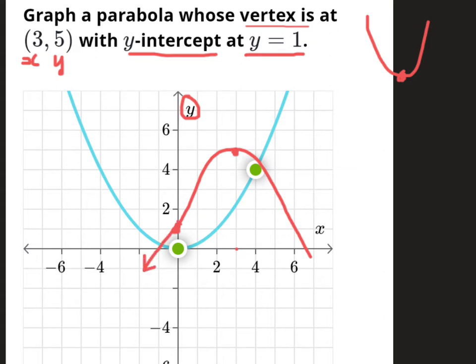So this is a parabola which has a vertex of (3, 5) and has a y-intercept of 1.